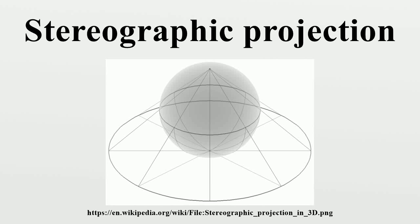In geometry, the stereographic projection is a particular mapping that projects a sphere onto a plane. The projection is defined on the entire sphere, except at one point, the projection point. Where it is defined, the mapping is smooth and bijective. It is conformal, meaning that it preserves angles. It is neither isometric nor area-preserving.